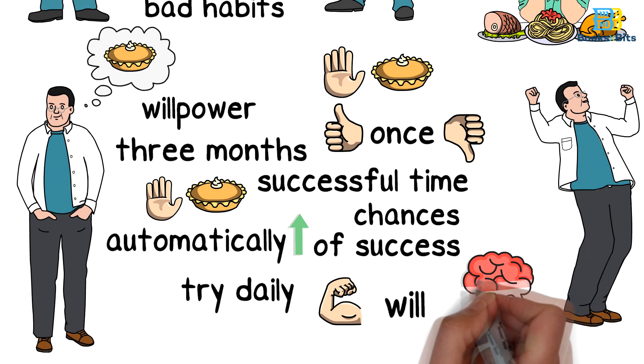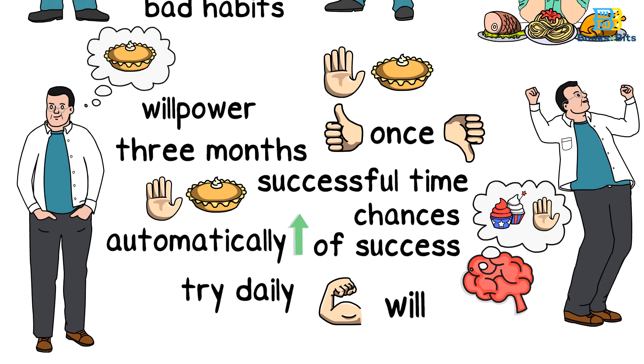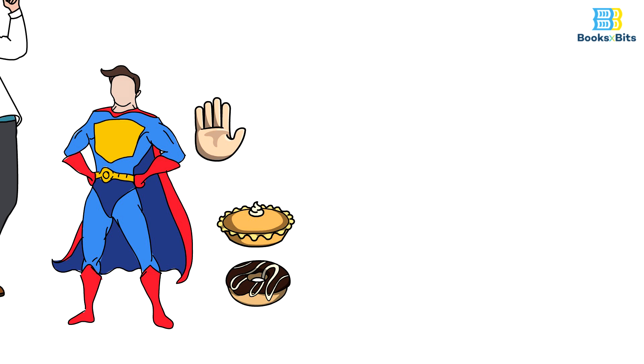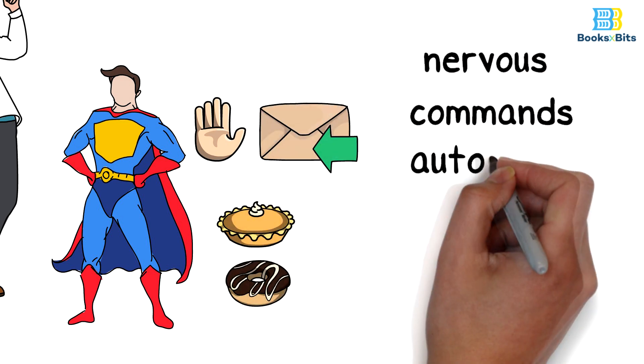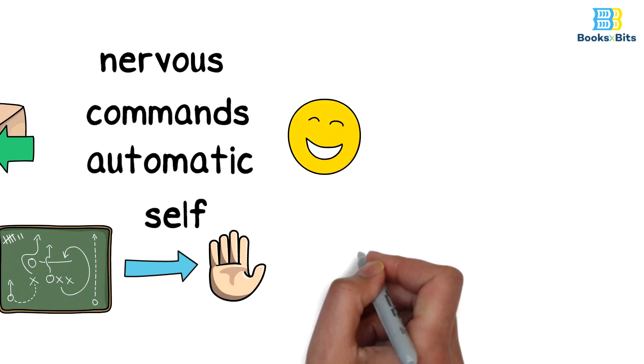This exercise can be practiced mentally, and it will give the same amazing results, just by imagining your refusal of unhealthy foods. For example, you can imagine yourself as a superhero refusing all kinds of sandwiches and sweets, as if you are sending nervous commands to the automatic self teaching it how to refuse these foods, and even make it happy with this achievement.